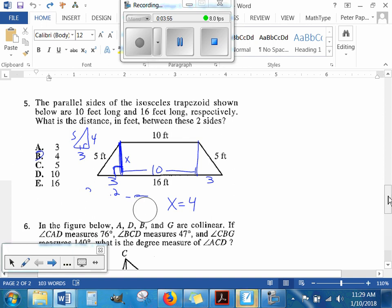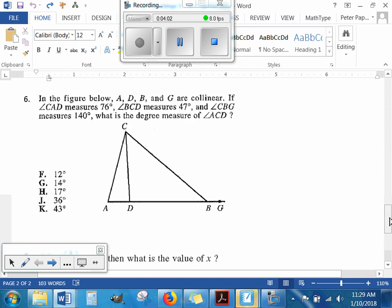Please select your answer for number six. We're trying to find the measure of angle ACD. I'll fill in all the given angles and work my way through, since once we have two angles inside a triangle, we can subtract them from 180 to get the third. Angle CAD is 76 degrees, BCD is 47 degrees, and CBG is 140 degrees. This has to be a 40 degree angle here, because those add up to 180 as a linear pair.